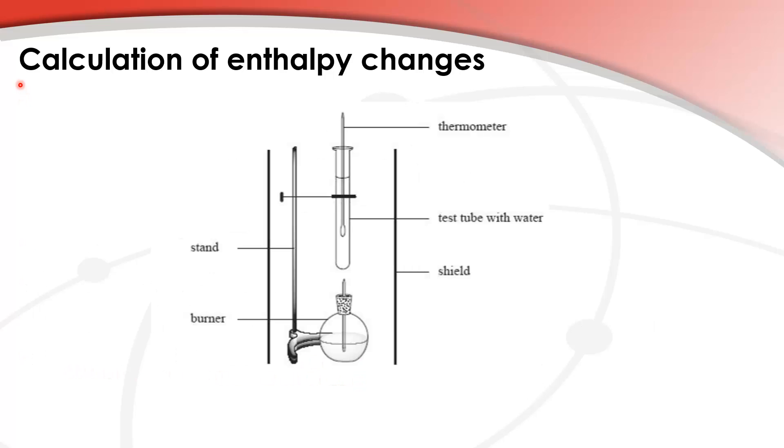Next we're going to try calculating an enthalpy change and here's the apparatus that you could use to measure the enthalpy change for a reaction. This is called an alcohol lamp or a spirit burner. Inside here you have a known mass of methanol and you burn the methanol which then heats the water inside this test tube. Again it's a known volume of water. You have a thermometer and you'd measure the initial and the highest temperature of the water.